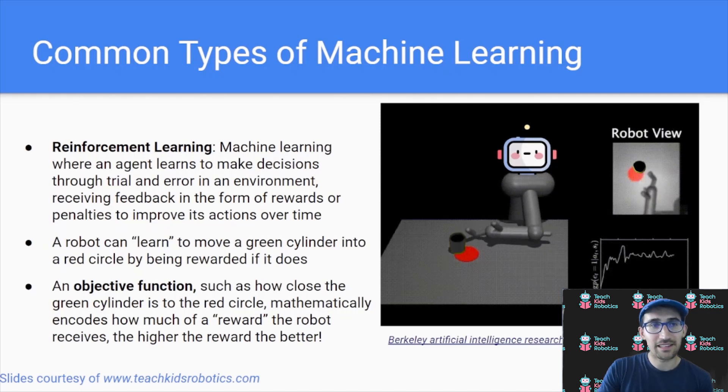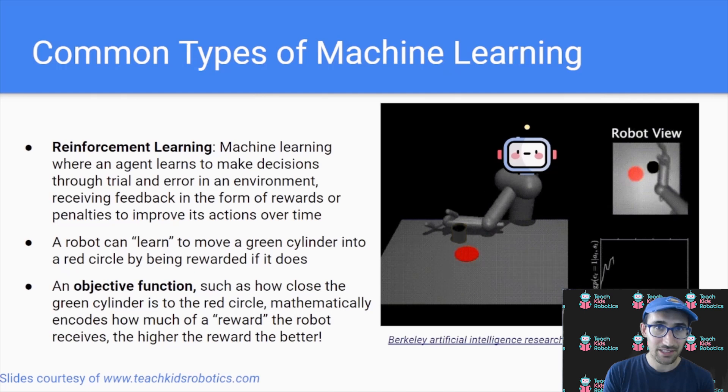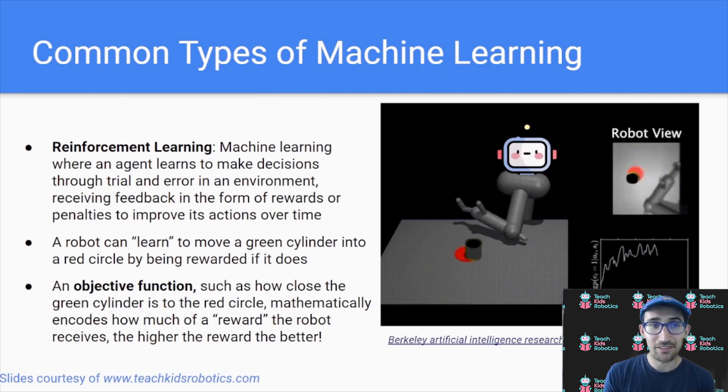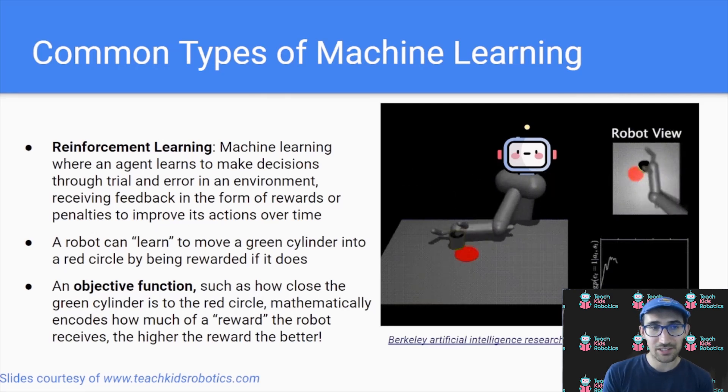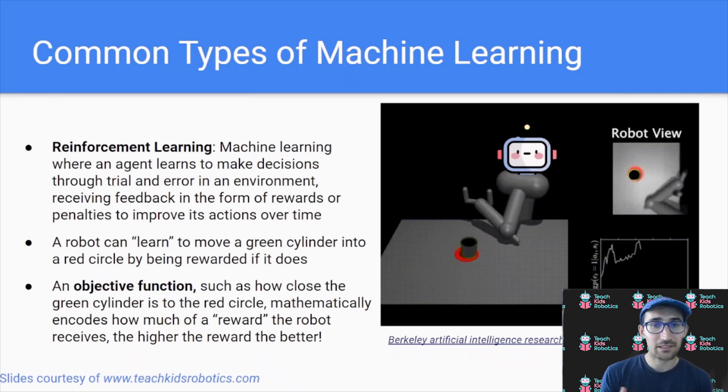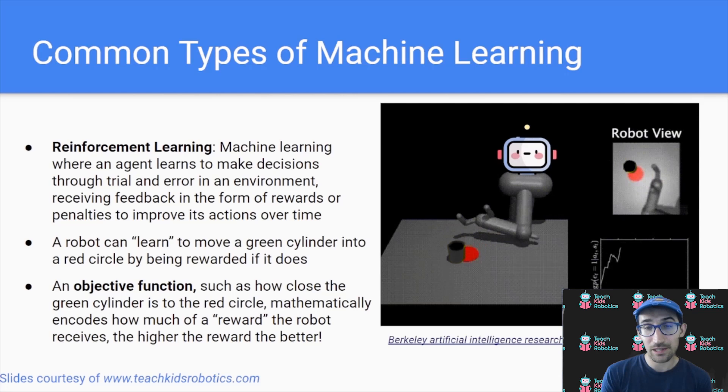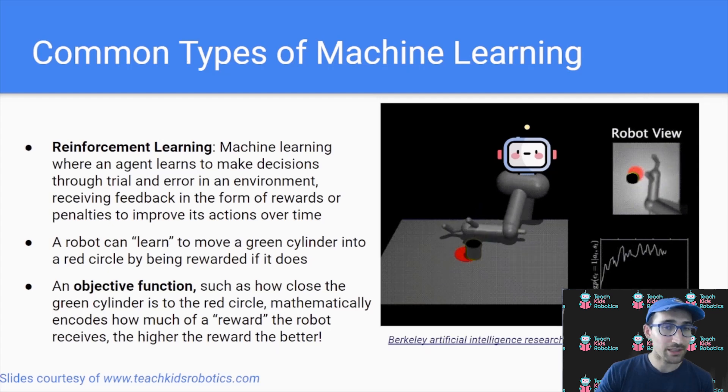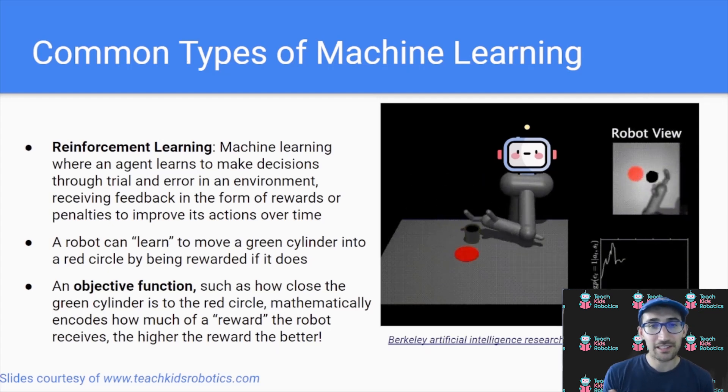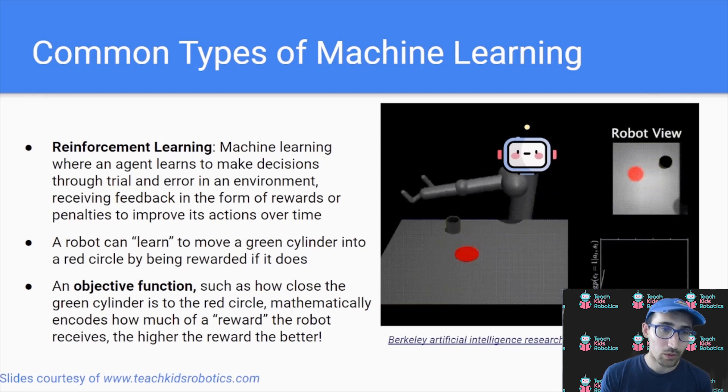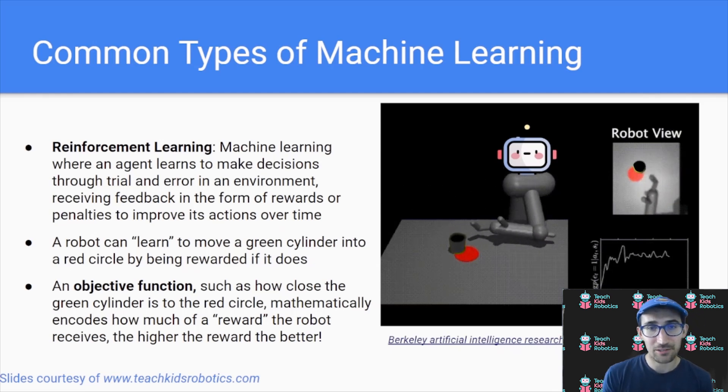Finally, I also want to highlight something known as reinforcement learning, and this one's very commonly used in robotics. This is machine learning where an agent learns to make decisions through trial and error in an environment, receiving feedback in the form of rewards or penalties to improve its actions over time. And we can see here in this graphical example, the robot can learn to move the green cylinder into the red circle by being rewarded if it does so correctly. By just trying enough times random arm movements, eventually it learns what makes a good movement based on the reward it received for getting the green cylinder close to that red circle.